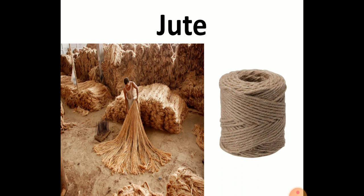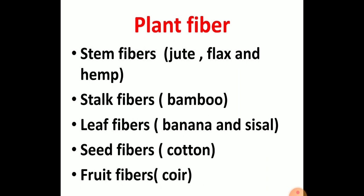Plant fiber is further divided into stem fiber, stalk fiber, leaf fibers, seed fibers and fruit fibers. Jute, flax and hemp are examples of stem fiber. Bamboo is an example of stalk fiber. Banana and sisal leaf are examples of leaf fibers. Cotton is a type of seed fiber. Fruit fiber has an example known as coir.